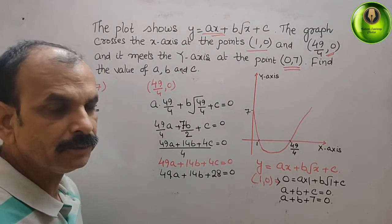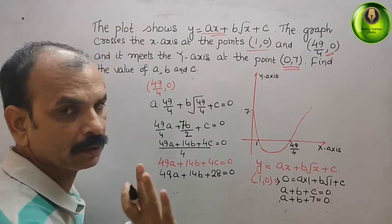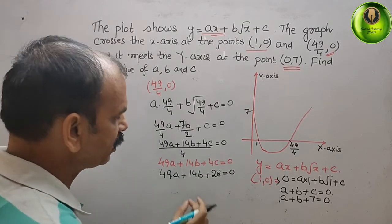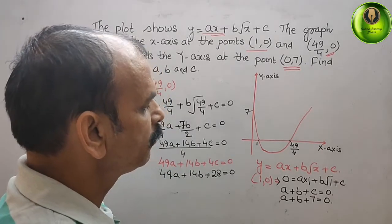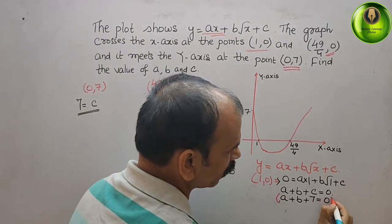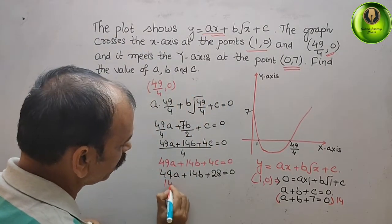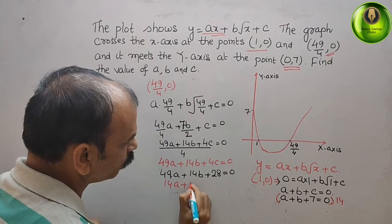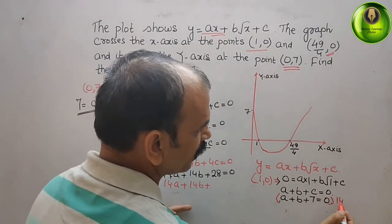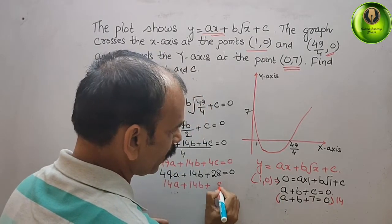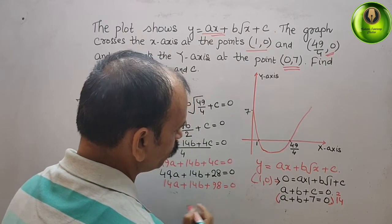We will use the elimination method to eliminate b. To make the coefficients of b equal, we multiply equation 1 (a + b = -7) by 14, giving: 14a + 14b + 98 = 0.